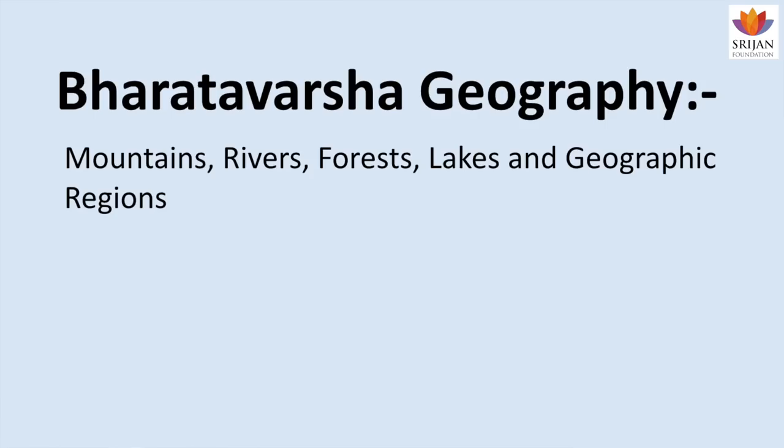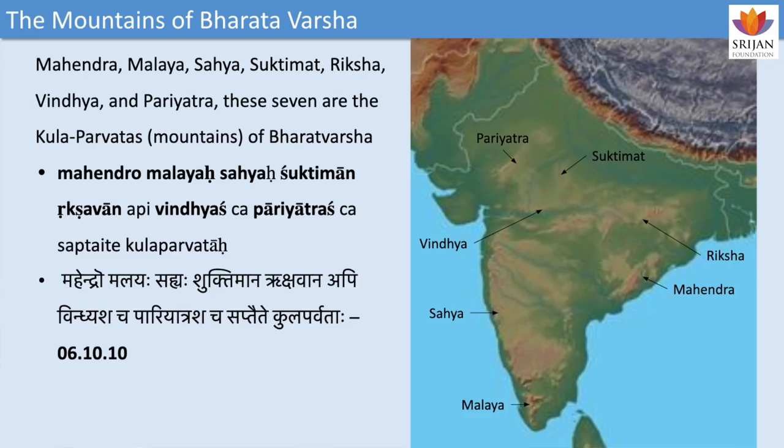Only after this geographical description does the Mahabharata war narrative start — the Kurukshetra war, starting with the Bhagavad Gita: 'Dharmakshetre Kurukshetre samavetaa yuyutsavah mamakah Pandavash chaiva kim akurvata Sanjaya.' That is the starting point of the Kurukshetra war narrative, and all the geography and even chronology — which scholars like Nilesh Oak and Narihari Achar use for dating Mahabharata — are discussed before that. All this geographical information is laid out as a conversation between Sanjaya, minister of Dhritarashtra, and Dhritarashtra himself.